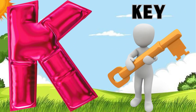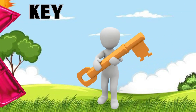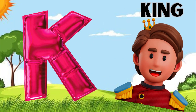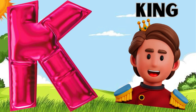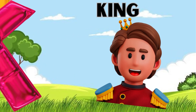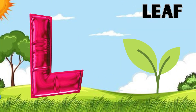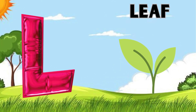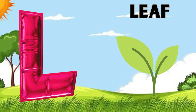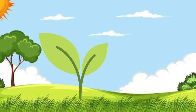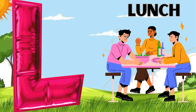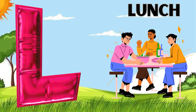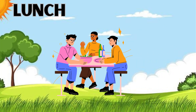K is for Key. K, K, Key. K is for King. K, K, King. L is for Leaf. L, L, L, Leaf. L is for Lunch. L, L, L, Lunch.